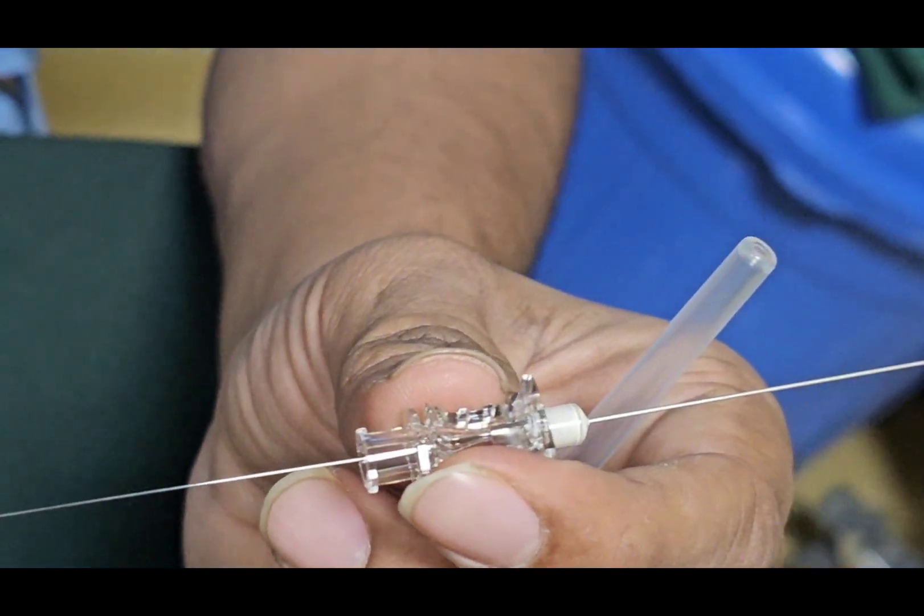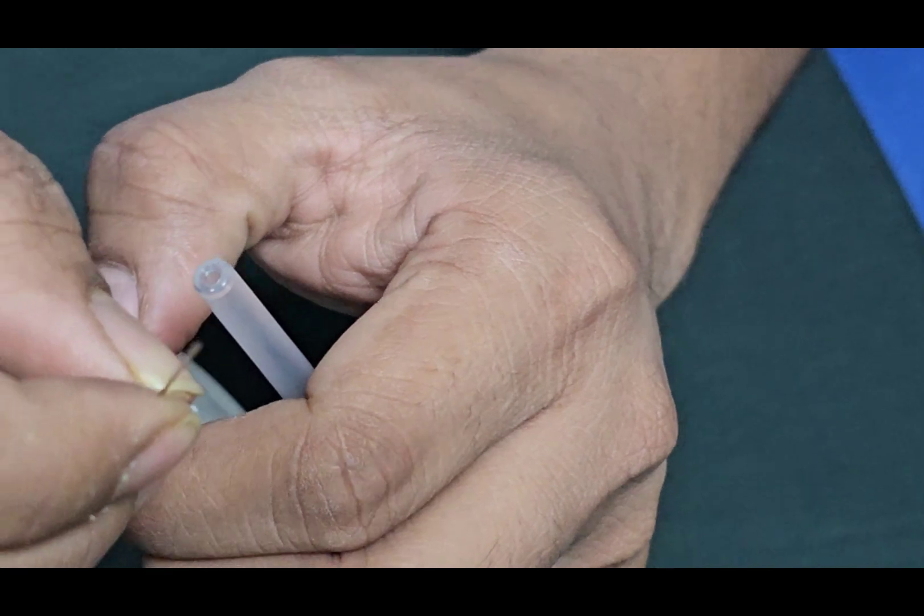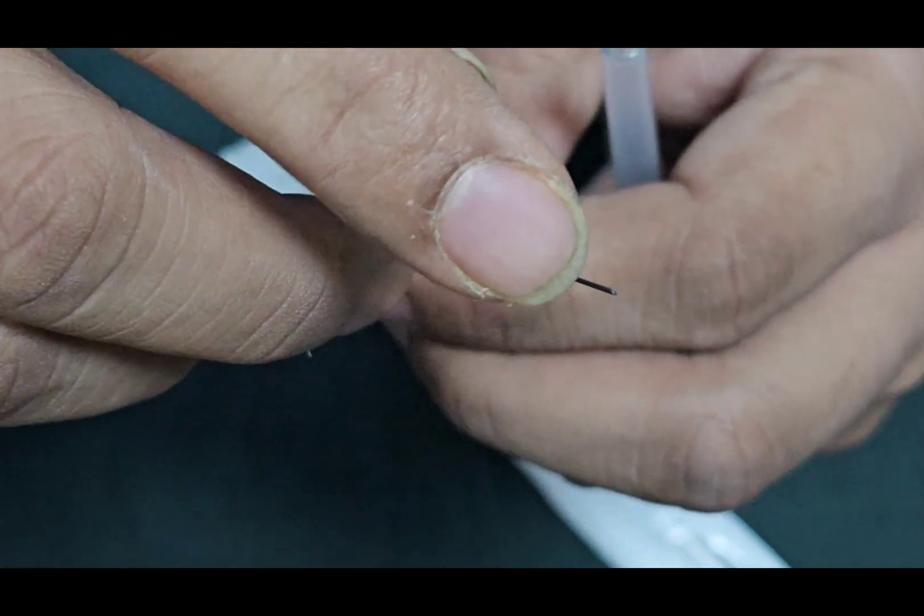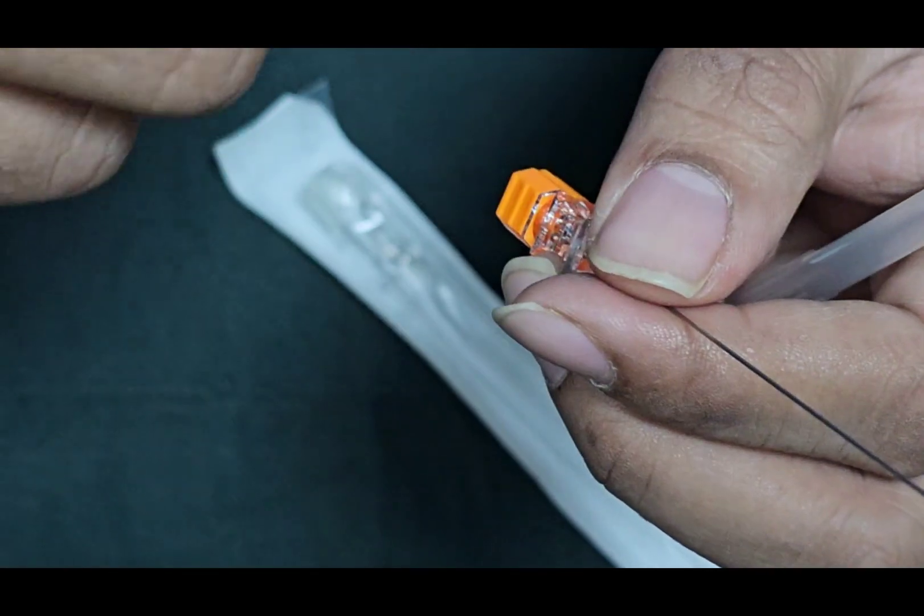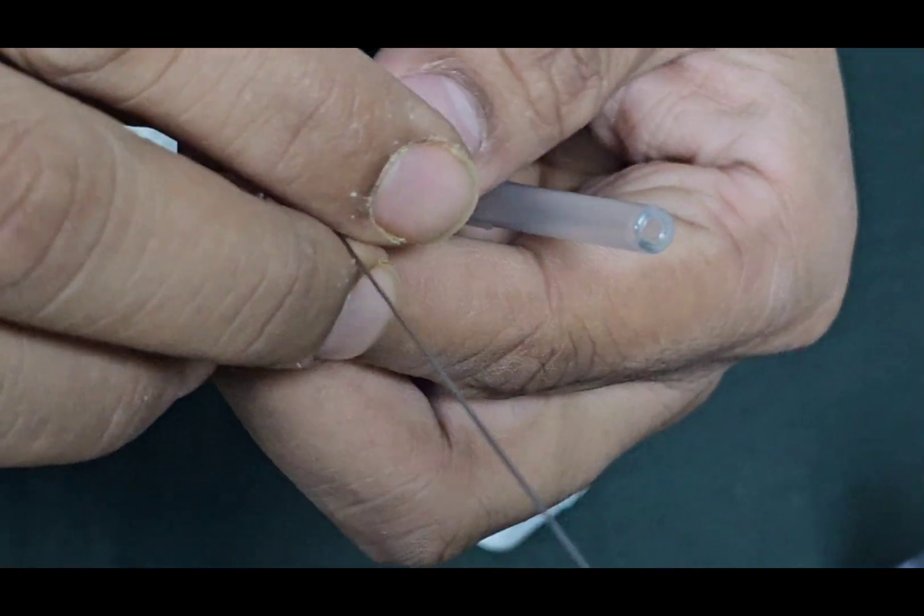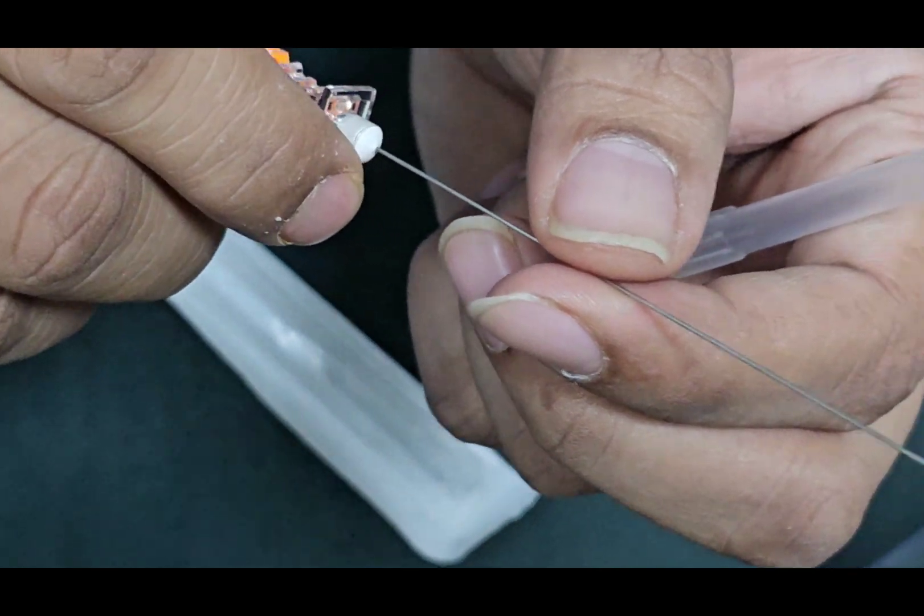And there is the open stylet. And we can attach it together. And this stylet is used to reinforce the needle also. And also to prevent any tissue entering into the spinal needle when we are approaching to the subarachnoid space.